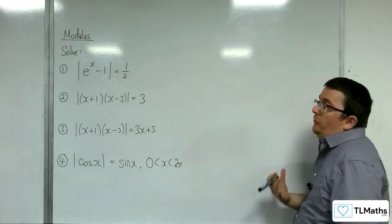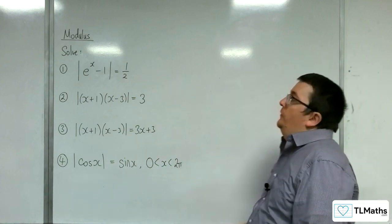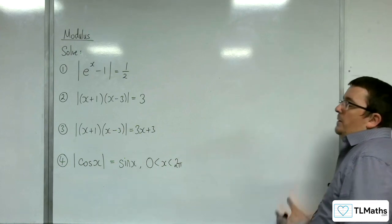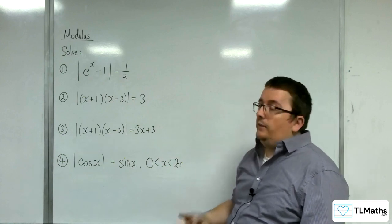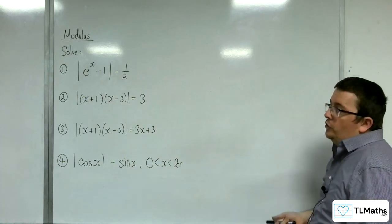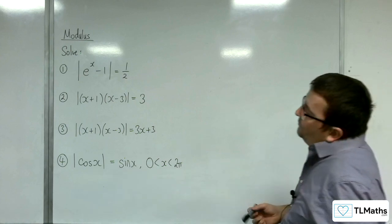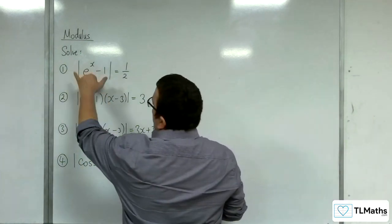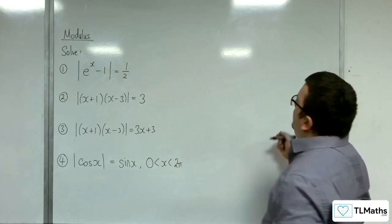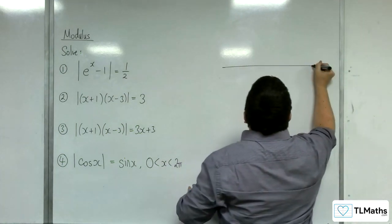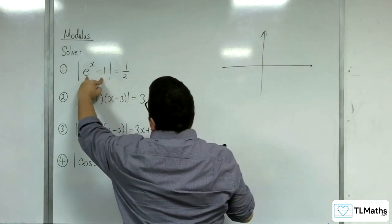In this video we're going to go through some examples of solving equations that involve a modulus. For each of these I'm going to attempt to sketch the left-hand side and the right-hand side on the same axes, in order to work out how many solutions there are and also to find those solutions. So with number 1, we've got the modulus of e to the x take away 1 is equal to 1 half. The first thing I'm going to do is sketch y equals e to the x take away 1.